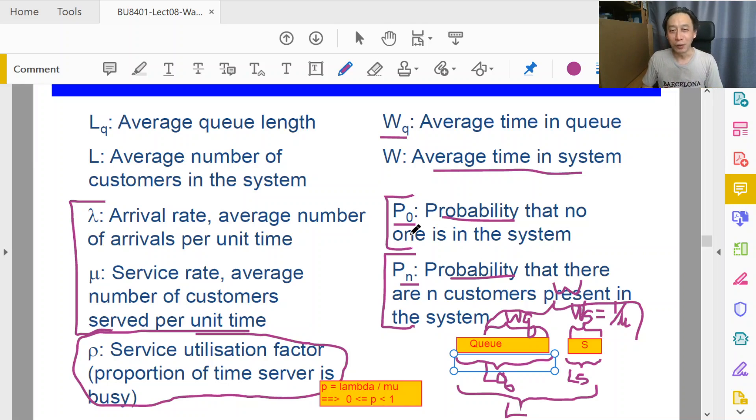So 99% of the time you go and inspect, randomly check your shop, and you find no one, is that a good sign? Maybe not so. What about, what if P0 is very low?